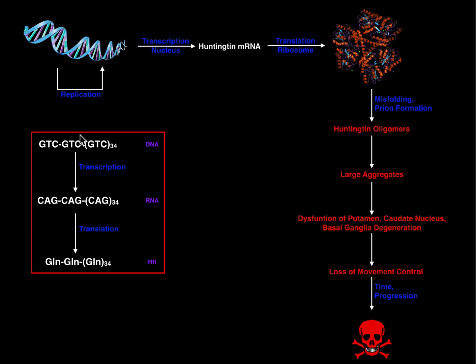In general, what we normally say is that if you have less than 36 of these repeats, you will probably not have Huntington's disease. There seems to be a critical threshold when you get to 36 or more of these repeats of GTC that you end up getting Huntington's disease.